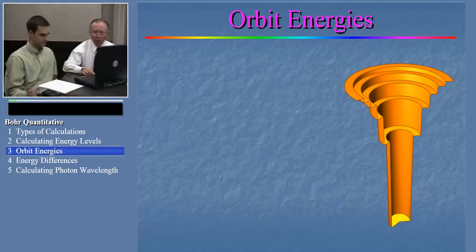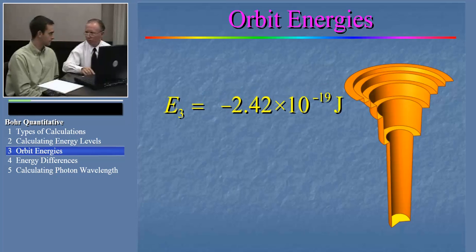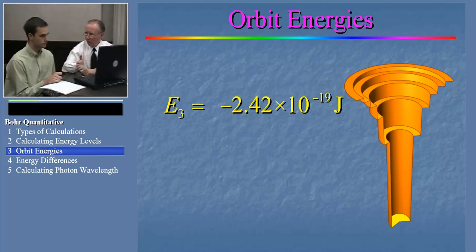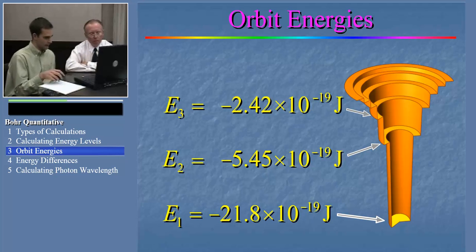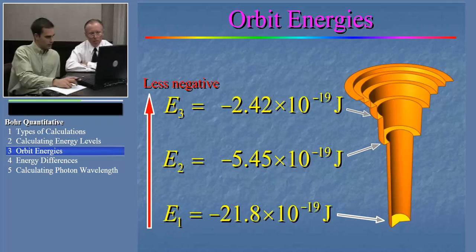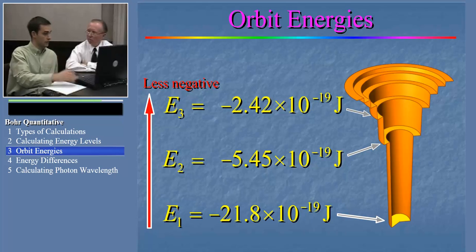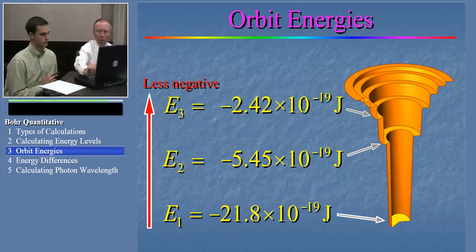Welcome back. The answer for energy three is negative 2.42 times 10 to the negative 19th joules. Now we have the energies of the first three orbits. Do the energies correspond to the principles of Bohr's model? Yes — the energies are becoming less negative as the electron goes up in the energy well. Also, the difference in energy between E1 and E2 is greater than the energy difference between E2 and E3, so the orbits are getting closer together in energy as we go up in the well.